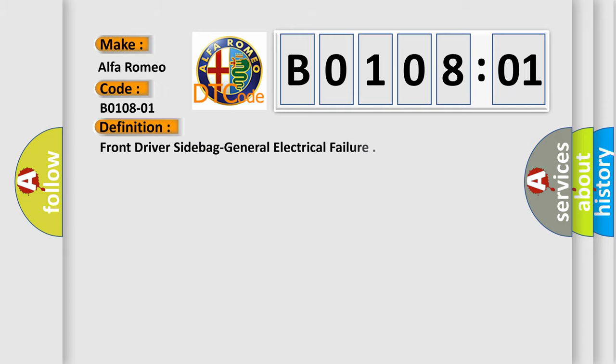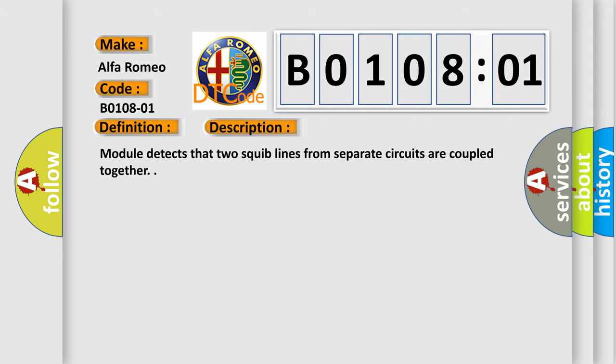The basic definition is front driver sidebag general electrical failure. And now this is a short description of this DTC code: Module detects that two squib lines from separate circuits are coupled together.